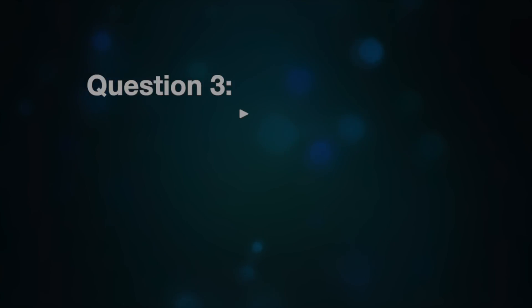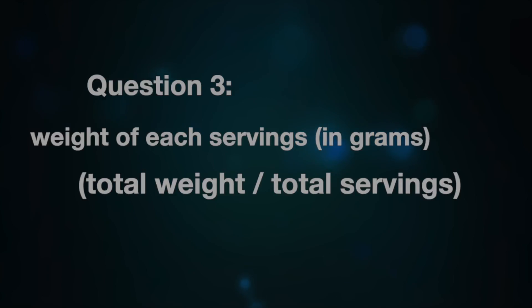If you love the recipe and want to adjust it — increase the quantity or decrease it — then you can use this formula. The next thing is to find the weight of each serving. Sometimes formulas give you the total weight, the servings, and the weight of each serving, but you don't always get that. So the way to find the weight of each serving is: take the total weight of the original recipe and divide it by the number of servings.